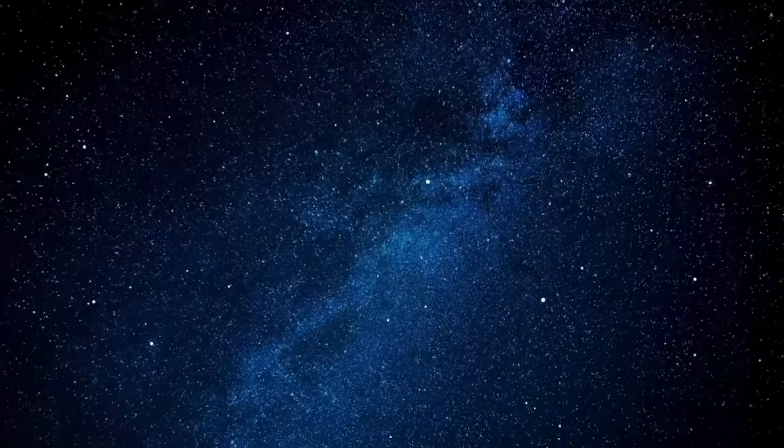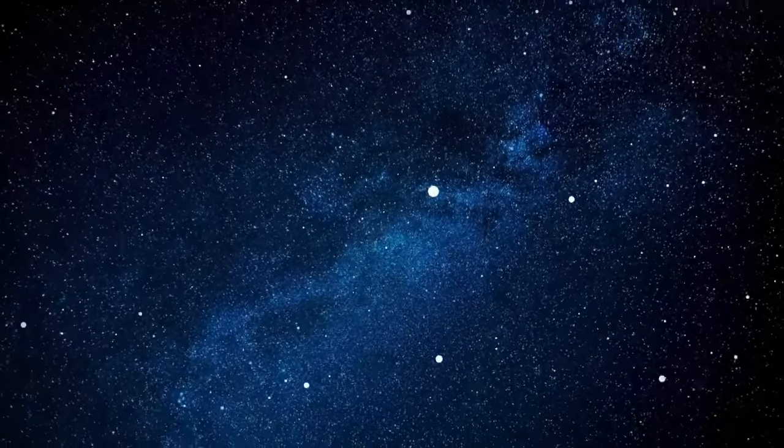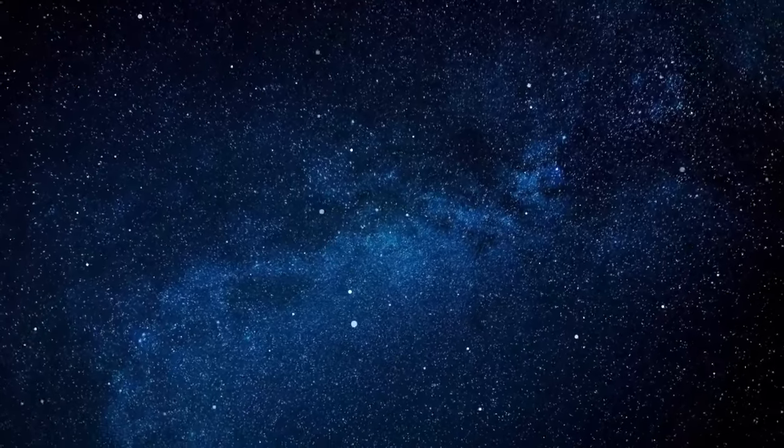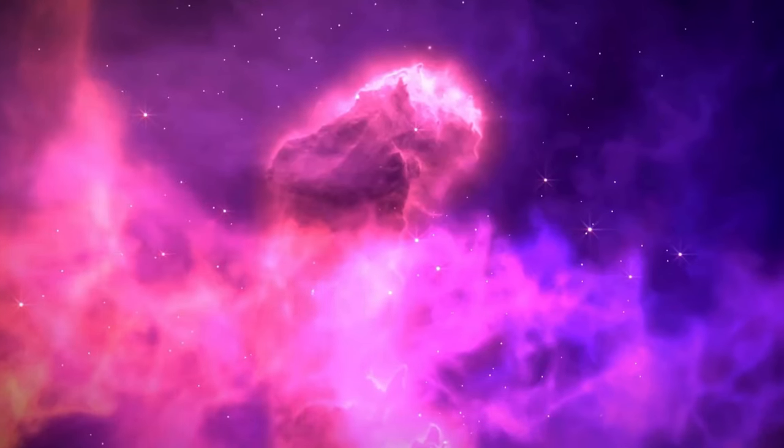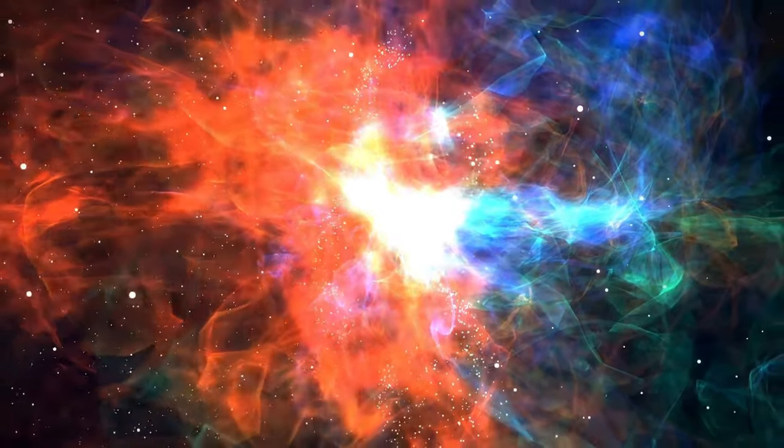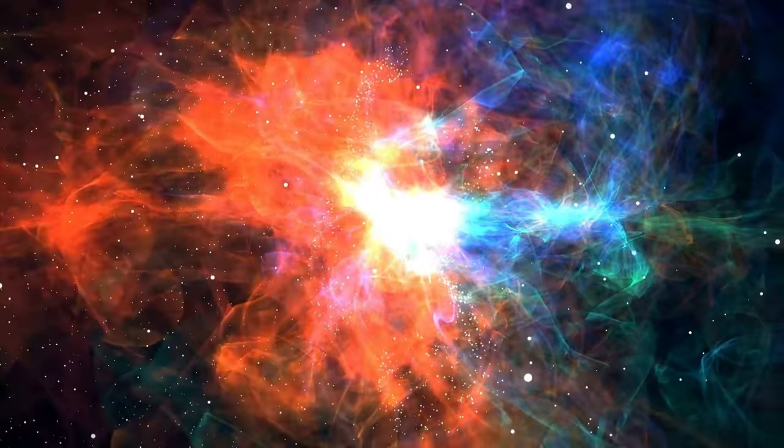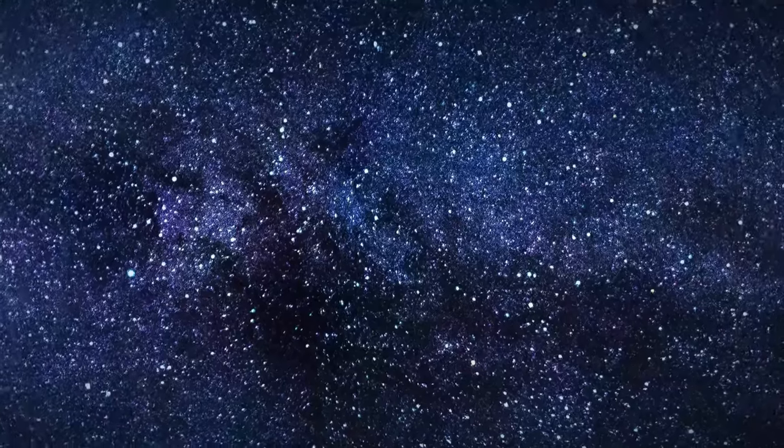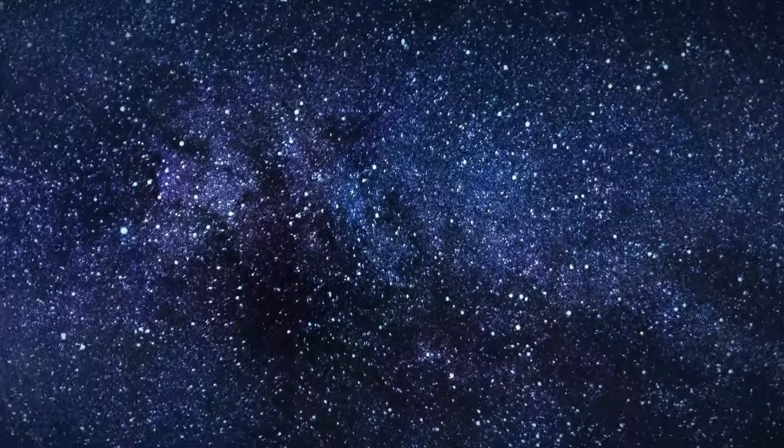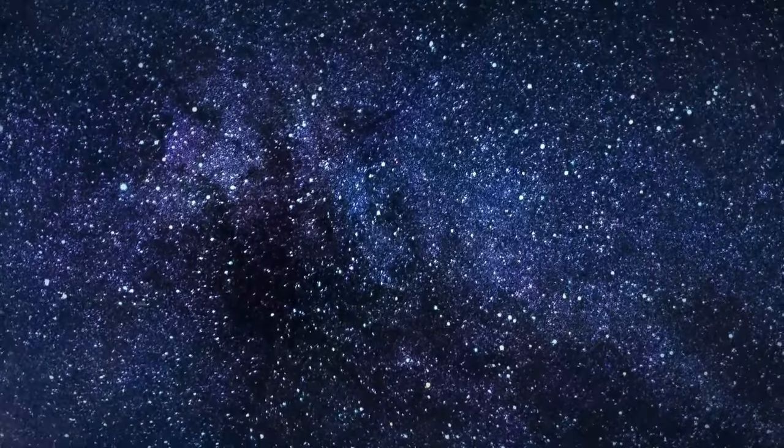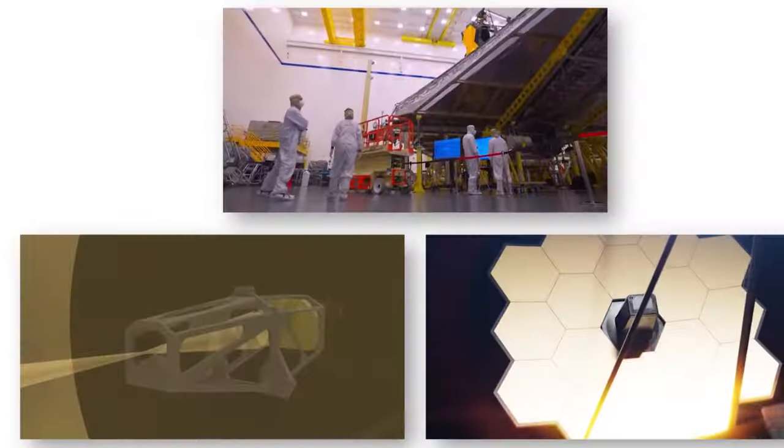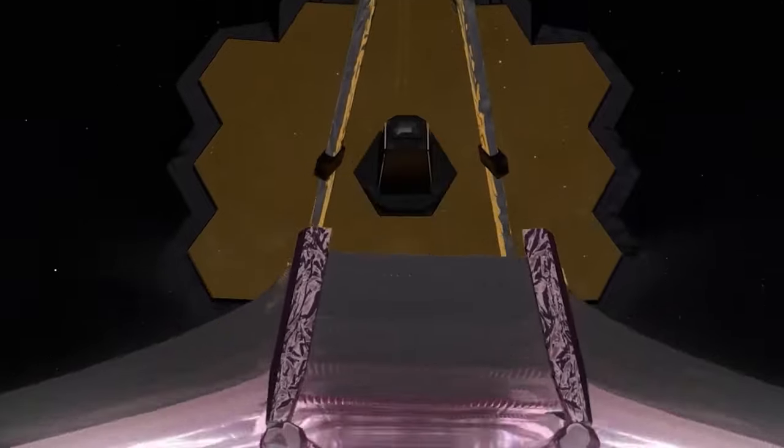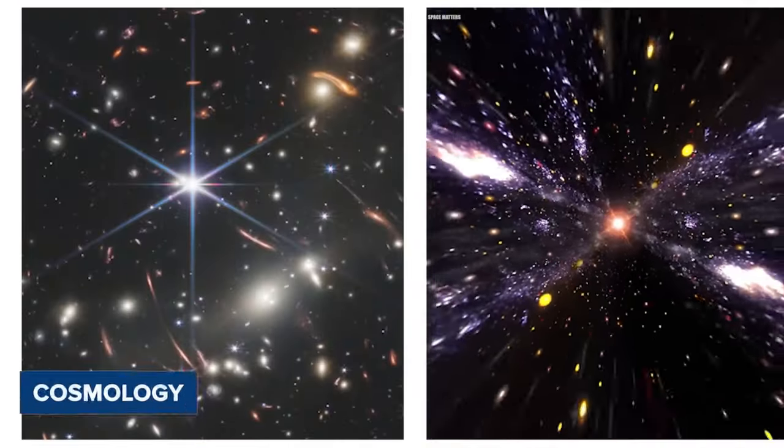Central to the JWST's groundbreaking capabilities is its primary mirror, a marvel of engineering comprising 18 hexagonal mirror segments crafted from gold-plated beryllium. This 6.5-meter diameter (21-foot) mirror dwarfs the Hubble's 2.4-meter (7-foot-10-inch) mirror, providing six times the light-collecting area and significantly enhancing the telescope's sensitivity and resolution.